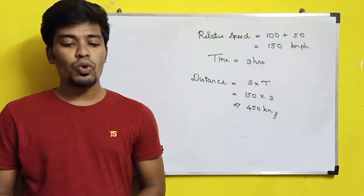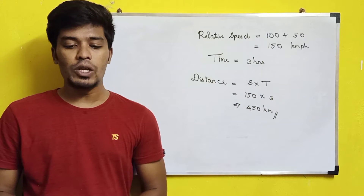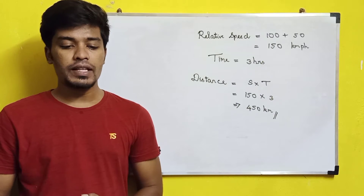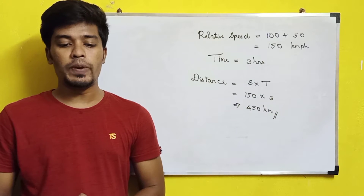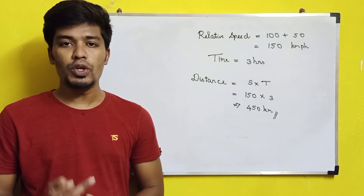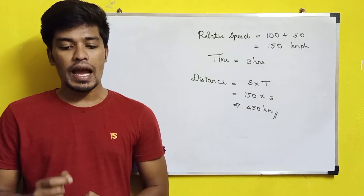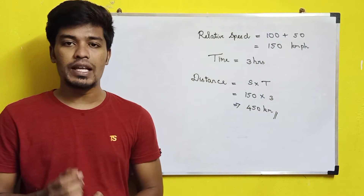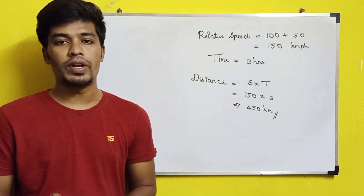The first question is: two trains are approaching each other at speeds of 100 km per hour and 50 km per hour. They will meet each other in 3 hours. Find the current distance between them. What they have given is the speeds of the two trains as 100 km per hour and 50 km per hour, and they will meet in 3 hours. We are asked to find the distance between the two trains.